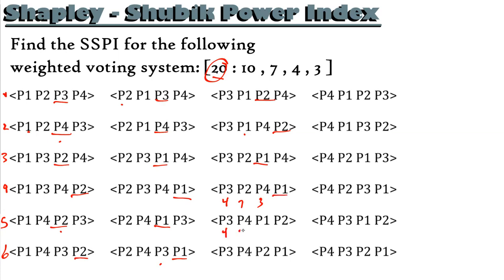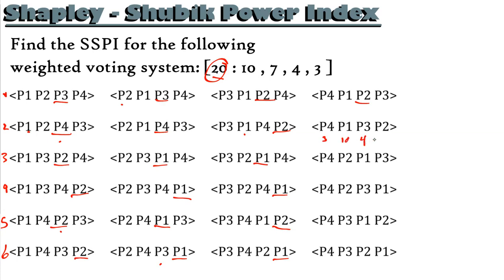Continuing: player 3 has 4, player 4 has 3, player 1 has 10 — that's 17, not enough, we need the fourth player. Player 4 has 3, player 3 has 4, player 7 — 3 plus 4 plus 7 equals 14, not enough, we need the fourth player. And 3 plus 4 plus 10 equals 17 — also not enough, requiring the fourth player.